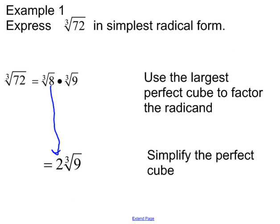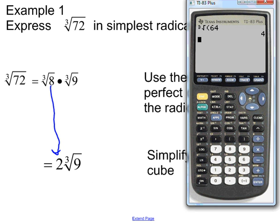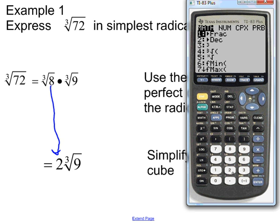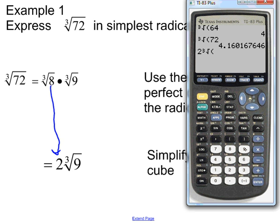You can always check these by using your calculator. You could type in cubic root of 72, and that should be the same as 2 times the cubic root of 9 — and it is, because it's just cubic root of 72 in a different form.